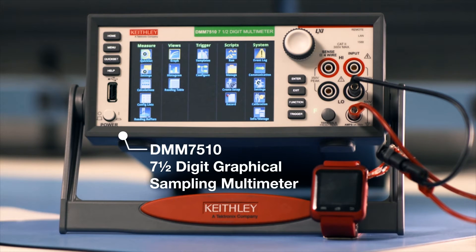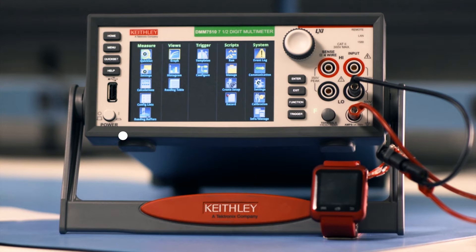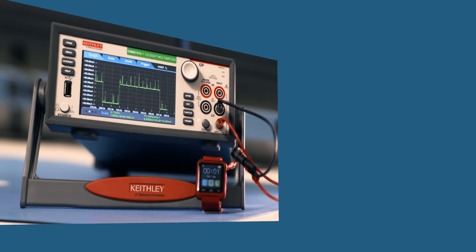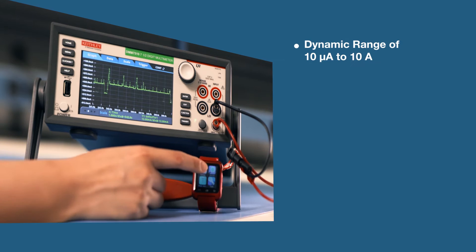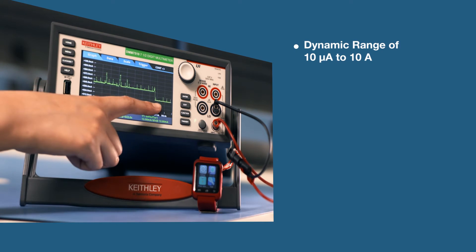The DMM 7510 7.5 digit graphical sampling multimeter allows you to easily measure the load current drawn by your device from amps in the device's active mode down to nano amps in its deep sleep mode.